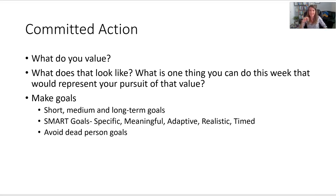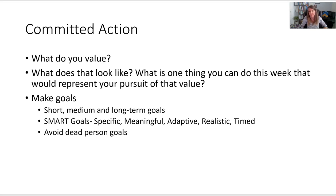In The Happiness Trap, there's a reframe of SMART goals — they call it Specific, Meaningful, Adaptive, Realistic, and Timed. One of my favorite things to note is to avoid dead person goals. A dead person goal is something you could easily achieve while dead — something a corpse could do better than you. A great example is 'never get angry' or 'stop worrying.' A corpse can do that, but can humans always stop worrying? You can do a lot to reduce that worry, but you can accept that some worry might creep in because you're not dead.